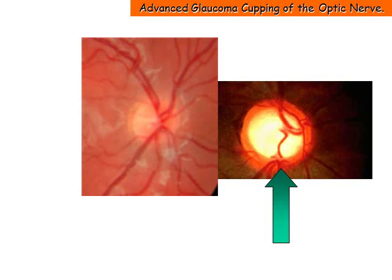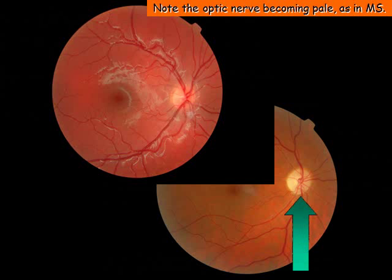This is an extreme example of advanced glaucoma cupping of the optic nerve. Notice the extreme depression and damage due to the weak nerve head relative to the eye pressure. In this imagery, note the optic nerve becoming pale, as in multiple sclerosis.